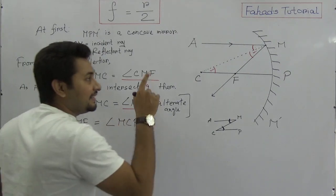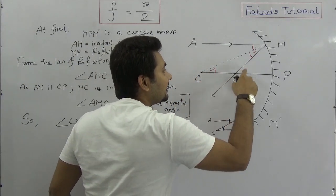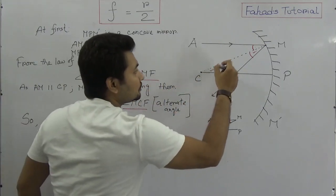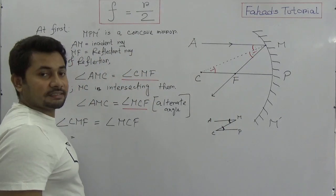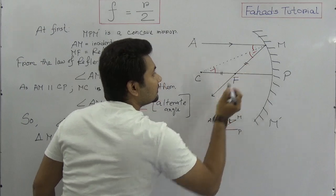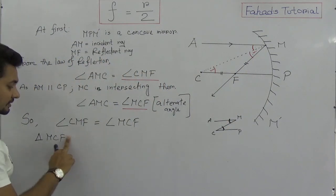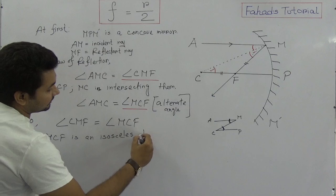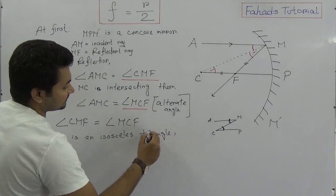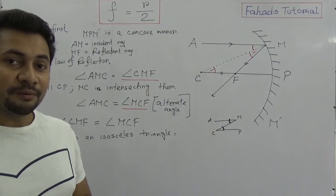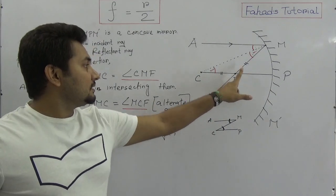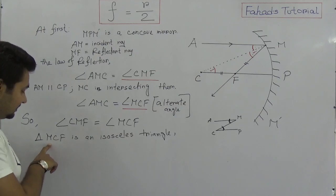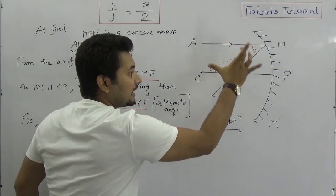In triangle MCF, these two angles are equal. Now we can say that the adjacent arm is also equal. So triangle MCF is an isosceles triangle. As it is an isosceles triangle, according to geometry, we know that in isosceles triangles the two equal arms are equal. So as triangle MCF is an isosceles triangle, CF is equal to FM.